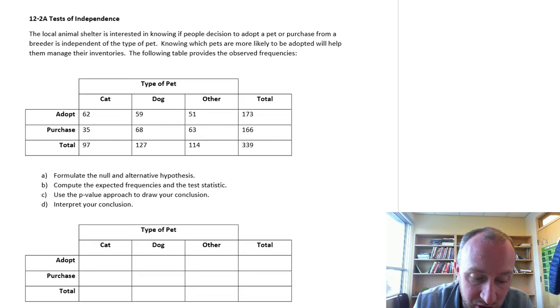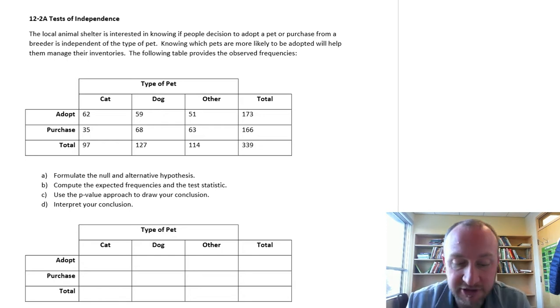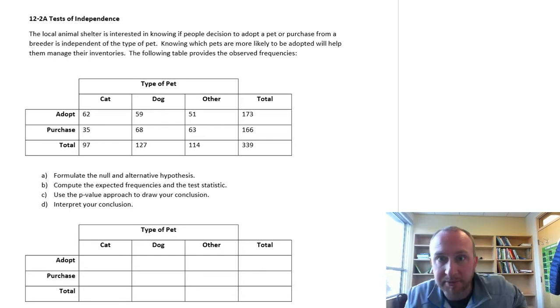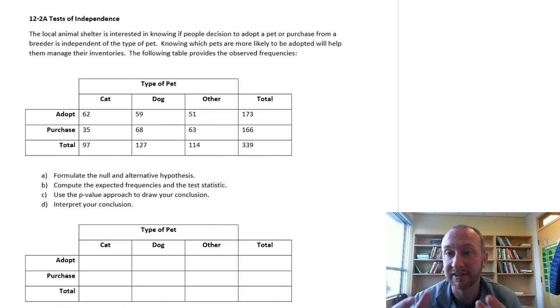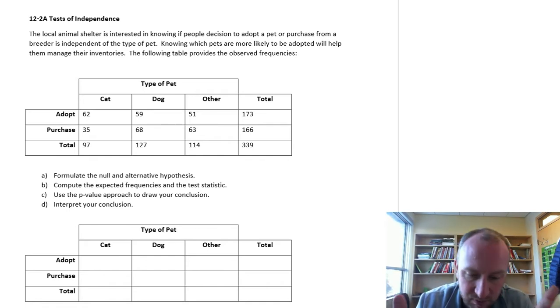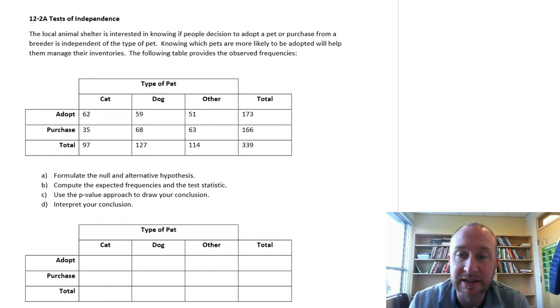In this exercise we're looking at an animal shelter. They're interested in knowing if people's decision to adopt a pet or purchase from a breeder is independent of the particular type of pet. Knowing which pets are more likely to be adopted will help the animal shelter manage their inventories of animals.